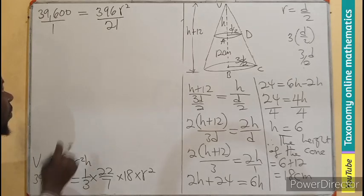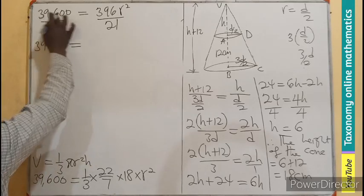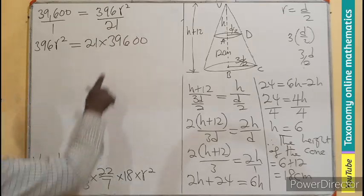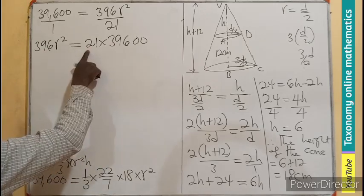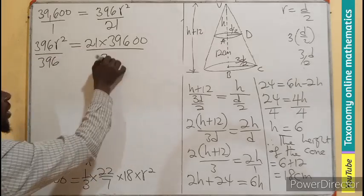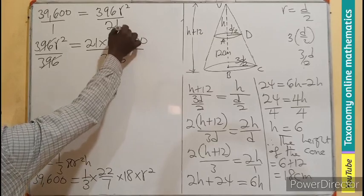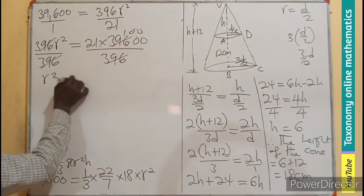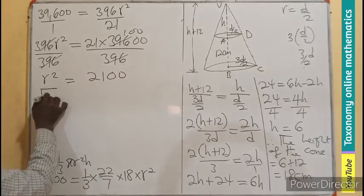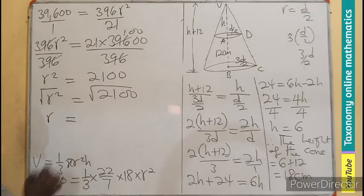We do cross multiplication: 396 r squared equals 21 times 39,600. I can see 396 is a common factor, so I divide by 396 on both sides. This cancels, leaving r squared equals 2,100. We find the square root of r squared, the square root of 2,100, which gives us 45.8258.